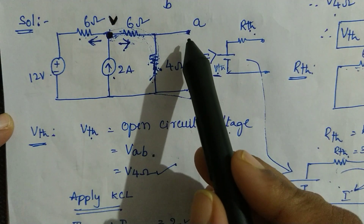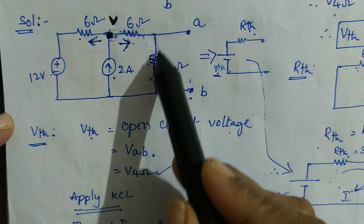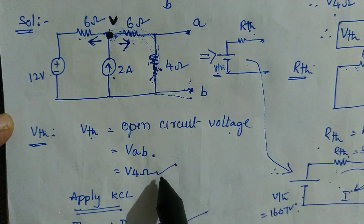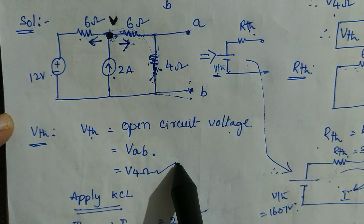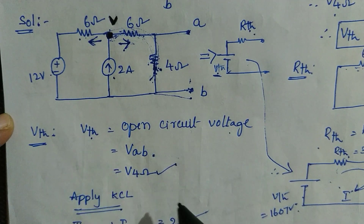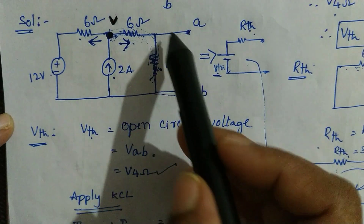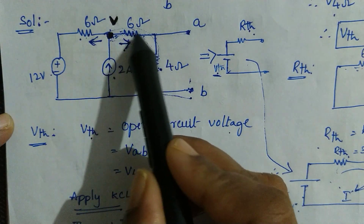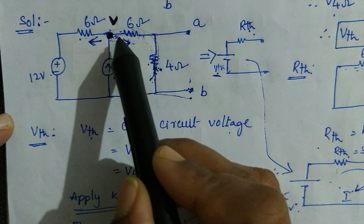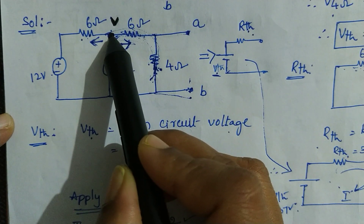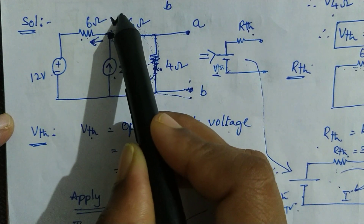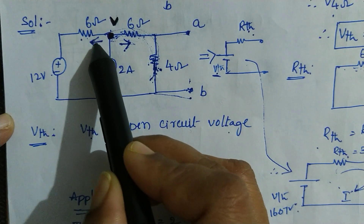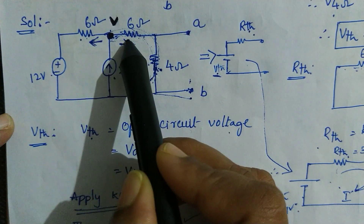What is the simplest path to reach from A to B? This is 4 ohms, so the voltage across 4 ohm will be considered as V Thevenin. Now somehow we need to find the current flowing through this branch. For that I have identified a node here. Let us assume the node voltage as V. If the direction is not specified, always take it as leaving from the node.